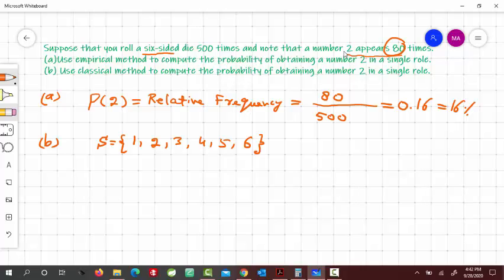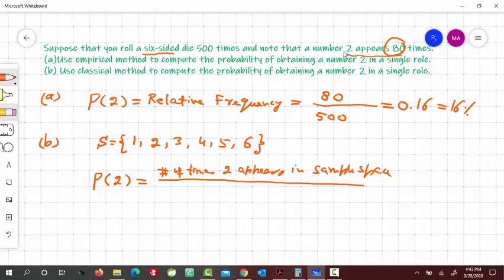And in this sample space, because all the outcomes have the same chances of occurring, the probability of occurring of 2 would be equal to the number of times 2 appears in the sample space divided by the number of outcomes in the sample space.